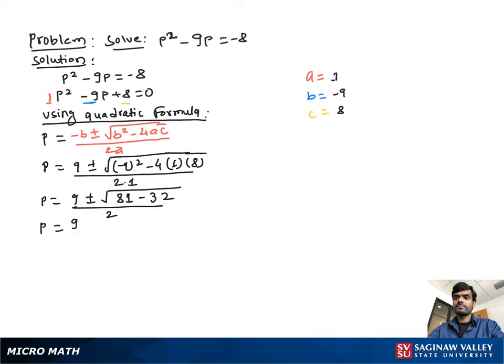p = 9 ± √(81 - 32 will be 49) over 2. And again, p = 9 ± (√49 is 7) over 2. Now we